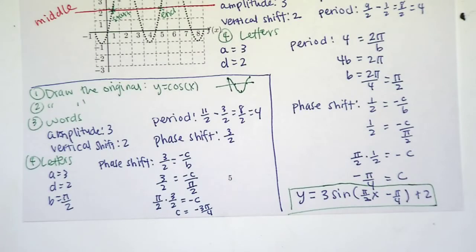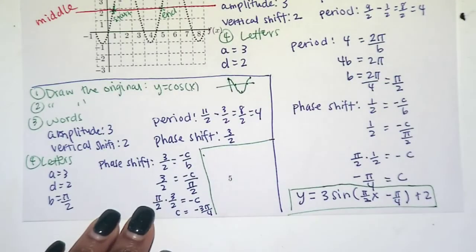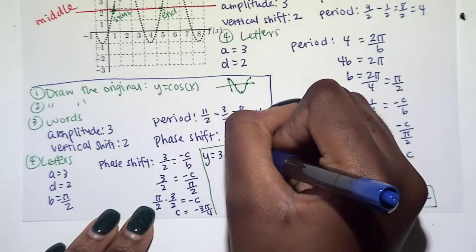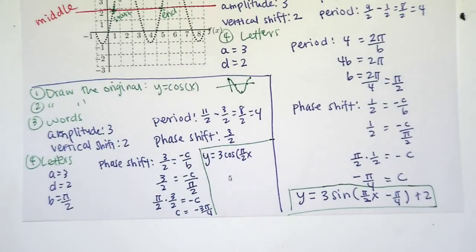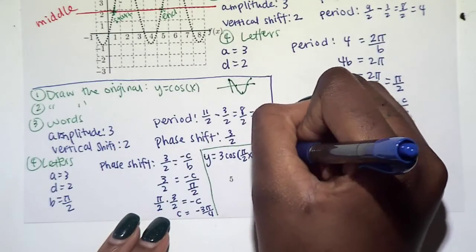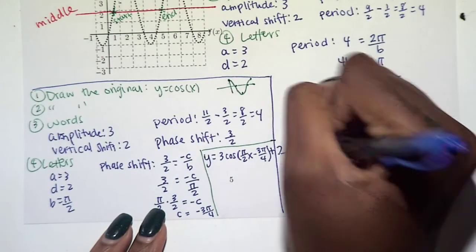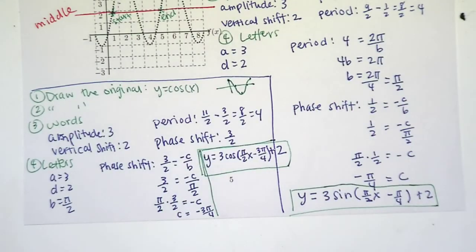All right, so now we can come up with our equation for cosine. I'm going to try to squeeze it in up here. So y equals 3 cosine pi over 2x. Remember, our C is now different. It's negative 3 pi over 4, and then plus 2. So this is our cosine graph.